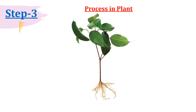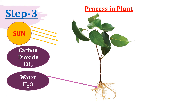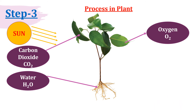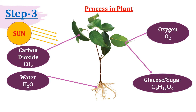Now the process in the plant. Here is one plant and this is our sun. The plant takes sunlight from the sun, water from the root, and carbon dioxide from the atmosphere. After taking these three components, the plant prepares its own food in the leaf itself, and gives out oxygen and glucose — the sugar with formula C6H12O6.